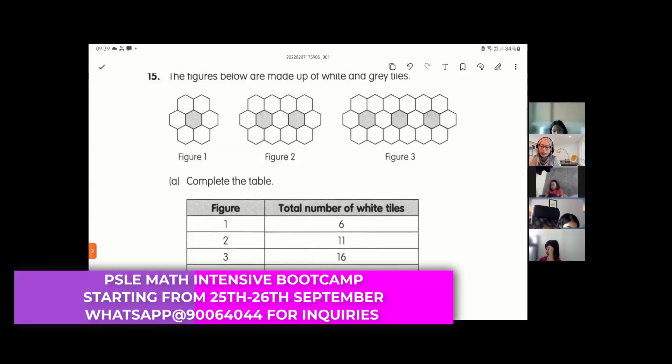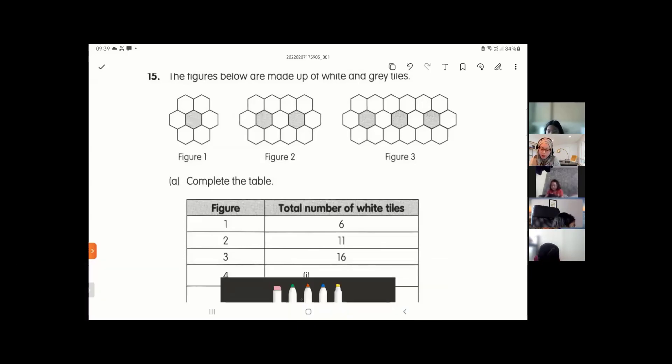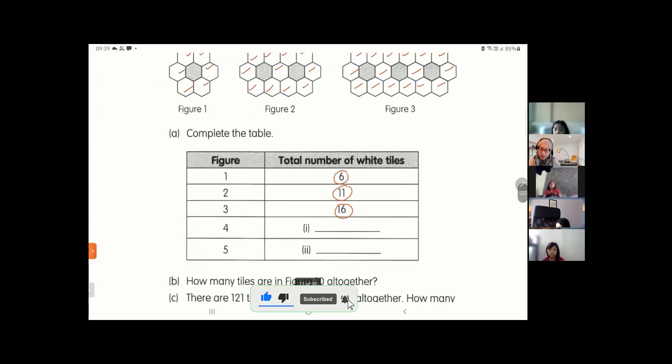Okay, so the figures below are made up of white and gray tiles. You have Figure 1, Figure 2, Figure 3. If you see the total number of white tiles in Figure 1: one, two, three, four, five, six. Figure 2: one, two, three, four, five, six, seven, eight, nine, ten, eleven. Figure 3: one, two, three, four, five, six, seven, eight, nine, ten, eleven, twelve, thirteen, fourteen, fifteen, sixteen.